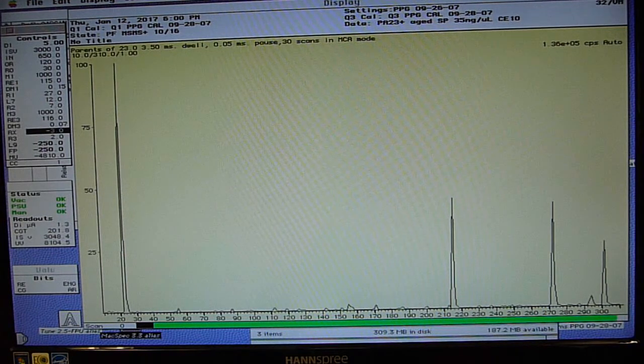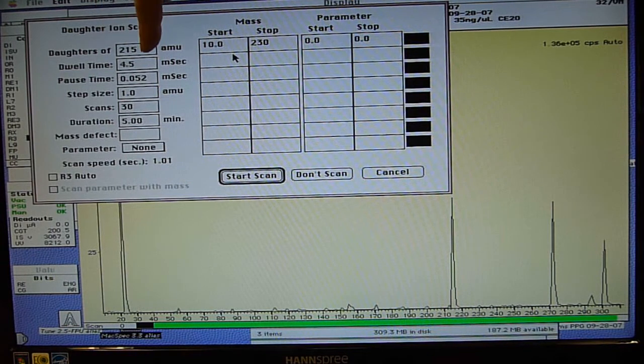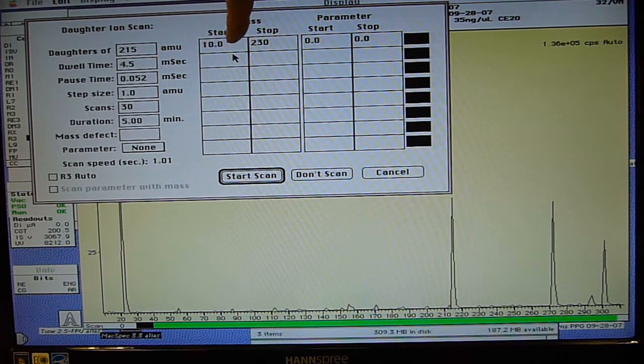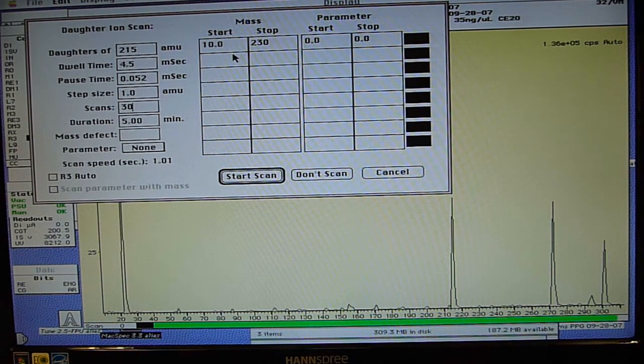Let's save this data. And just to confirm that 215 does generate, is a sodium adduct, let's set up a traditional product ion scan or in old terminology daughter ion scan. So Q1 is going to let in 215. And Q3 is going to scan from 10 to 230. 1 AMU steps, 30 scans. We're going to add it up. And we're going to start the scan.